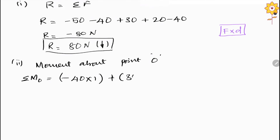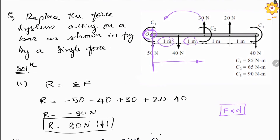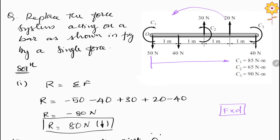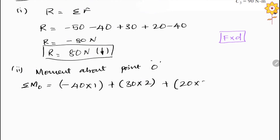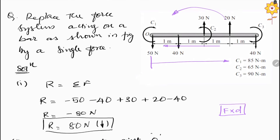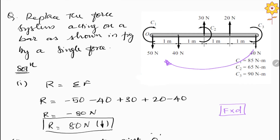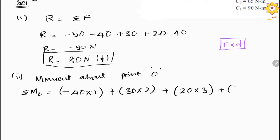Plus 30 into 2. The 20 N force also creates an anti-clockwise rotation about O, so it is positive. The distance from the origin to the 20 N force is 3 meters, so we add plus 20 into 3. The last 40 N force acts downward, creating a clockwise rotation, so it is negative. Its distance from the origin is 4 meters, giving minus 40 into 4.